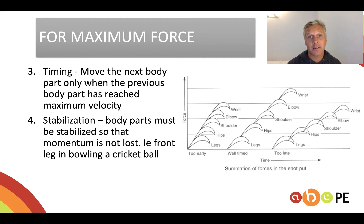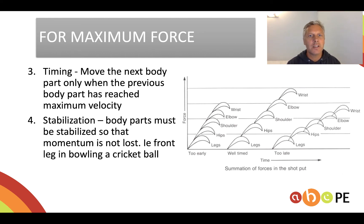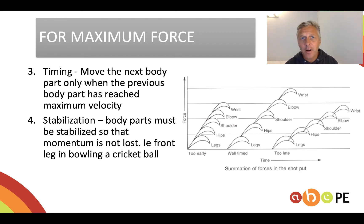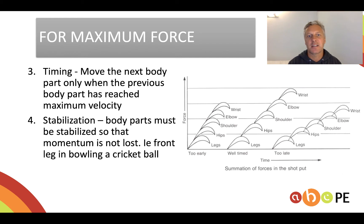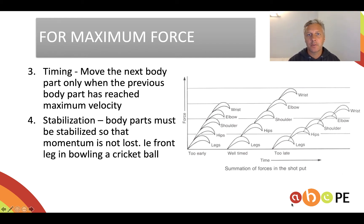So timing is important. If we start with the legs and move to the trunk, then to the shoulders, and finally to the wrist, we want to make sure that we move the next body part when the previous body part reaches maximal velocity. And finally, in order to pass all of that momentum on so it doesn't get lost, we have to stabilise the body parts — as we move the momentum from one body part to the next, that previous body part stabilises.